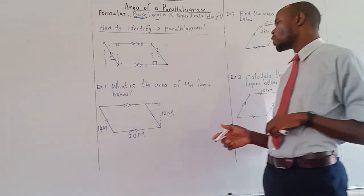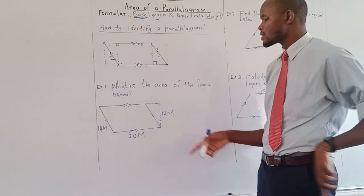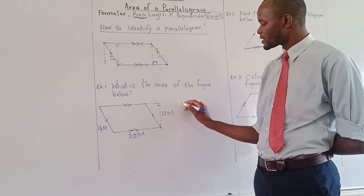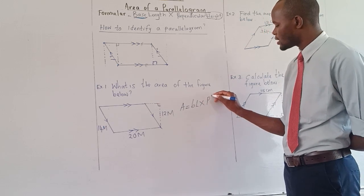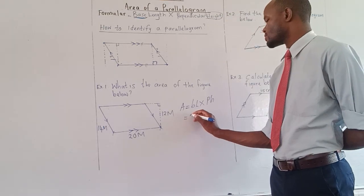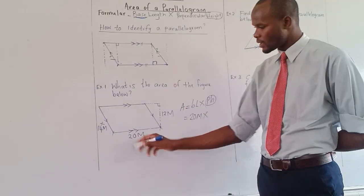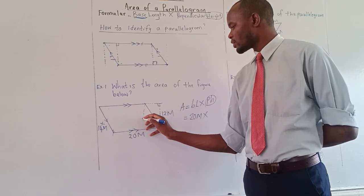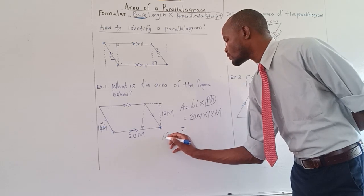Example 1: What is the area of the figure below? It has two pairs of parallel lines and is a four-sided figure, so this is a parallelogram. The area of a parallelogram is base length times perpendicular height. The base is 20 meters. The perpendicular height is not the slanted side — that is not 90 degrees. The perpendicular height is this line from here up to here, which is 12 meters.